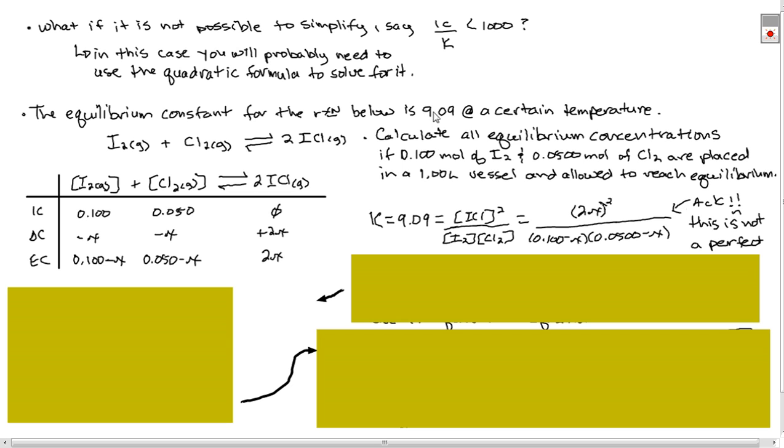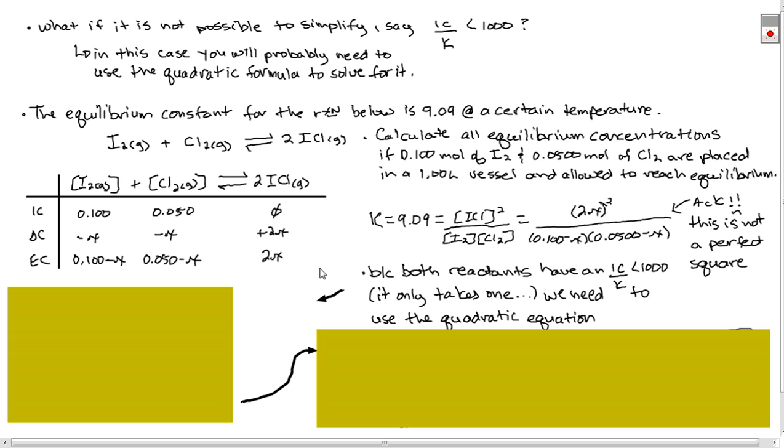So what's this going to look like? Well, we plug in our equilibrium constant, which is up here for that specific temperature. And we get 2x squared over these two things. Not a perfect square. We can tell that this is not going to create a perfect square. And because both reactants have an initial concentration over the K ratio of less than 1000, we need to use the quadratic equation. So say that the iodine ratio was still greater than 1000 but the chlorine one wasn't. We would still have to use the quadratic equation here. Because that would mean that the change in my initial concentration to my equilibrium concentration would be a factor.